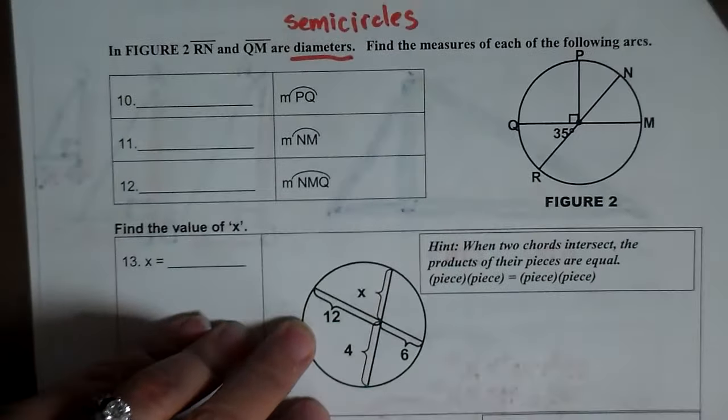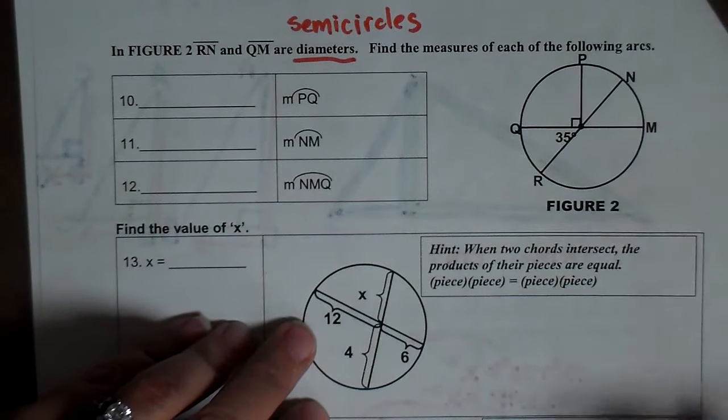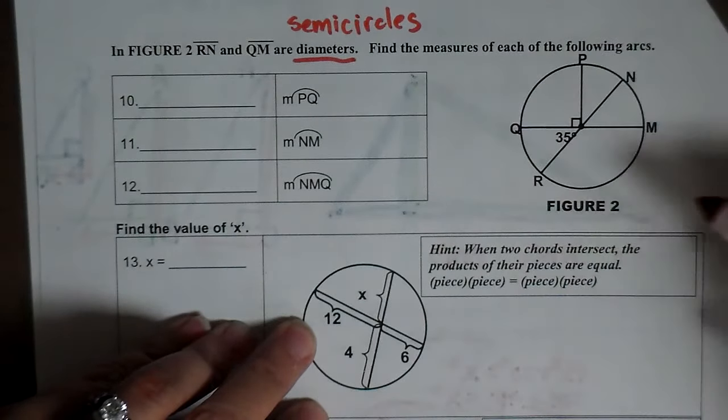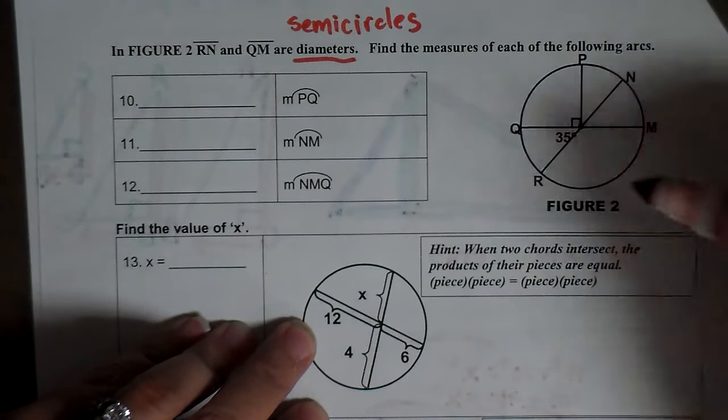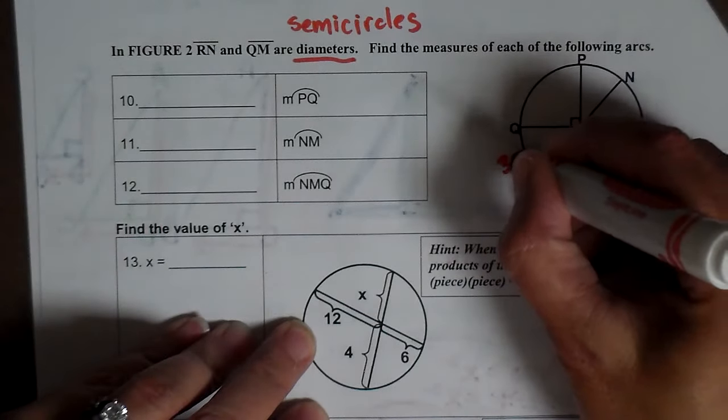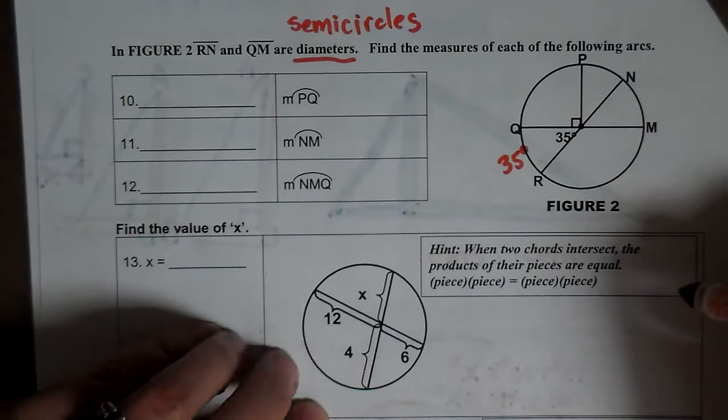Because the diameter cuts the circle in half, we've got semicircles. Now remember, the arc is the same measure as the central angle. So for example, if that's 35, arc QR has to be 35.